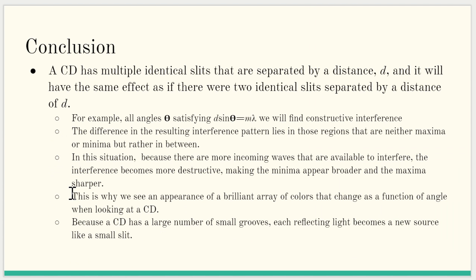A CD has multiple identical slits that are separated by a distance D, and it will have the same effect as if there were two identical slits separated by a distance of D. For example, all angles theta satisfying D times sine of theta equals M times lambda, we will find constructive interference. The difference in the resulting interference pattern lies in those regions that are neither maxima or minima, but rather in between.